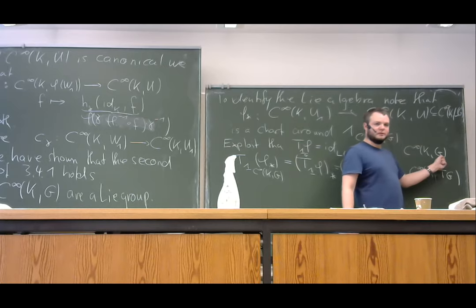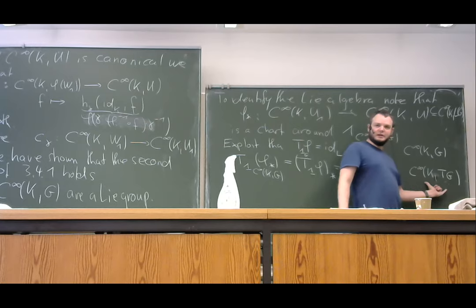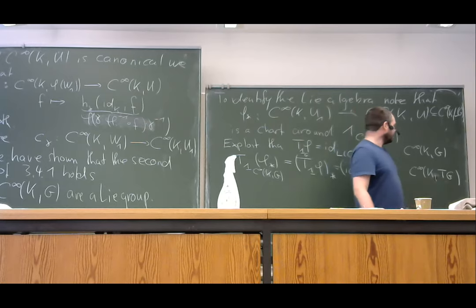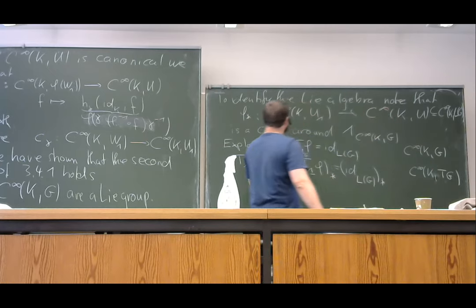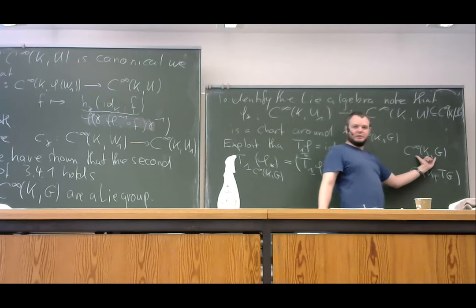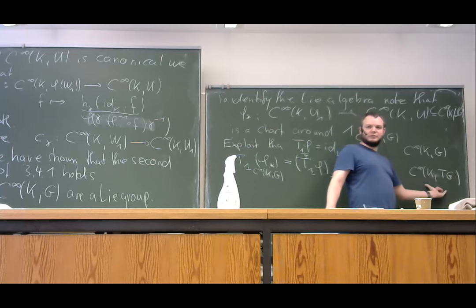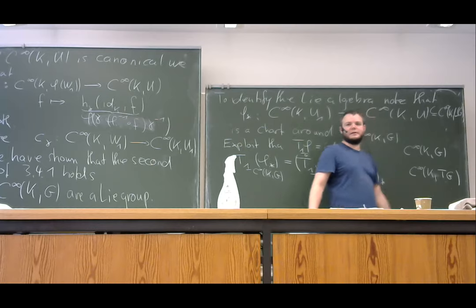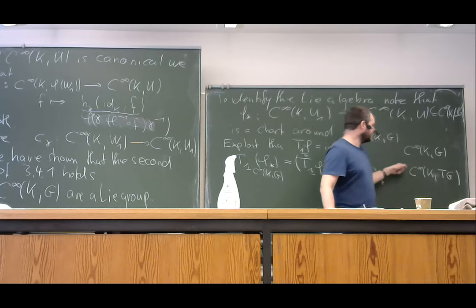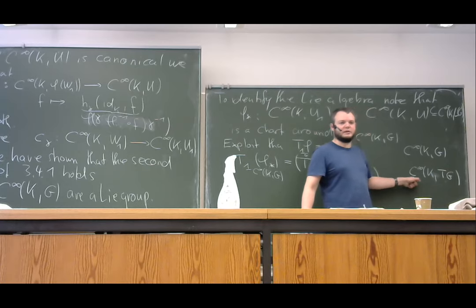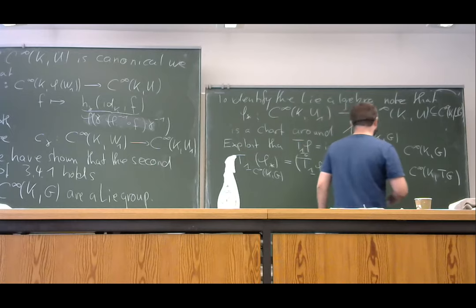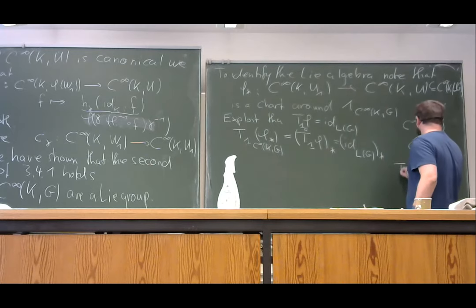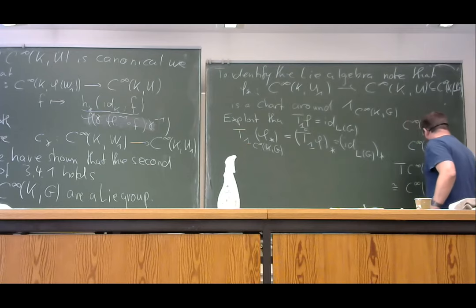We therefore have the canonical identification: T(C∞(K, G)) ≅ C∞(K, TG). This is the same argument as when you have a local addition, but exploiting that TG is again a Lie group. And this is what was driving our identification of the tangent mapping of the push-forward — we could only identify the tangent if we had an identification of the tangent mapping as something in the new function space with values in the tangent bundle.